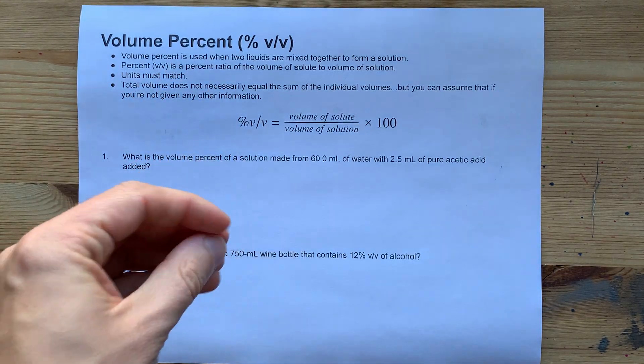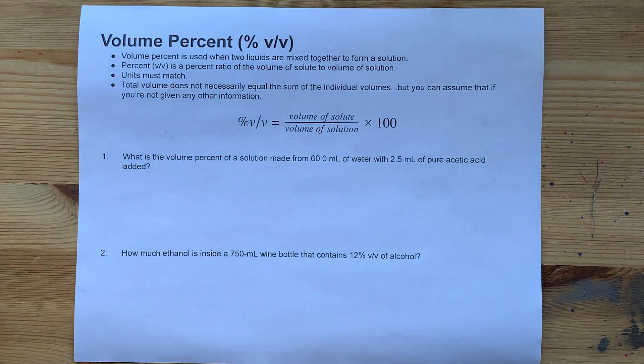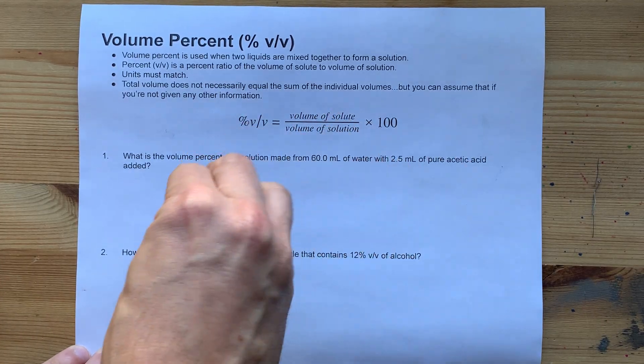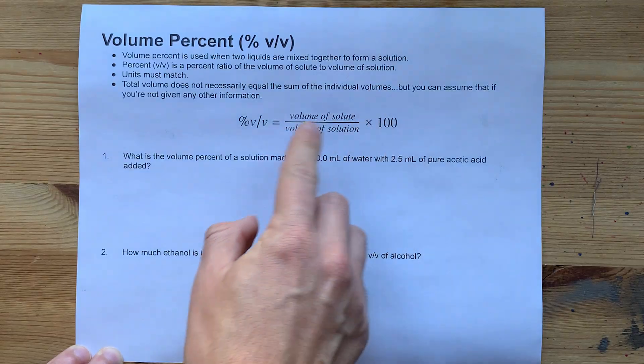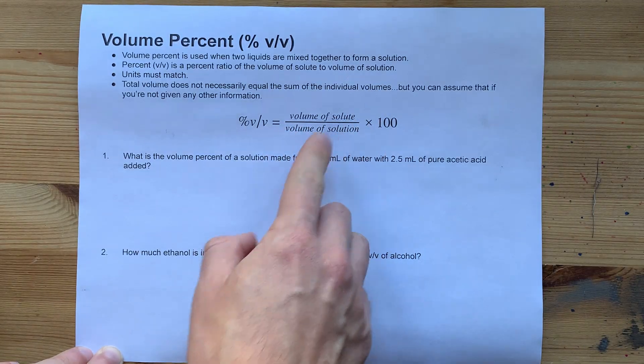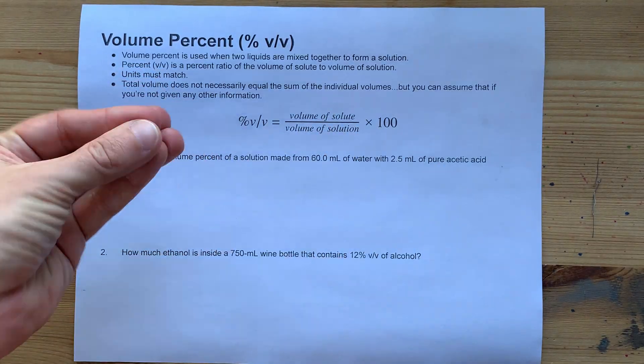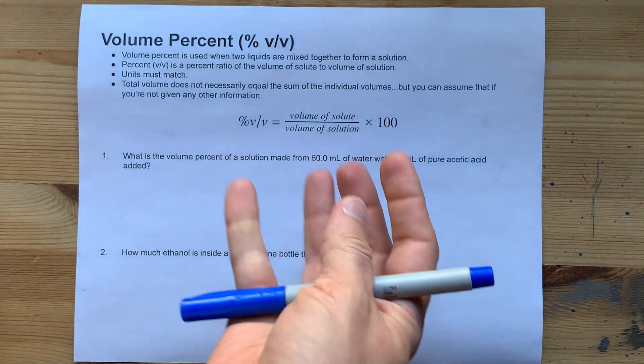Volume percent is a method of measuring concentration of solutions. It uses the volume of the solute, the thing that's dissolved, divided by the volume of the solution, which is the combination of both solute and solvent, the thing that's dissolved and what it is dissolved in.